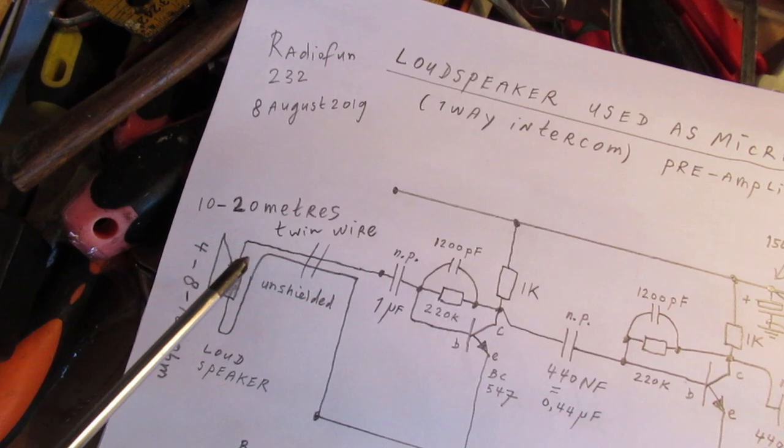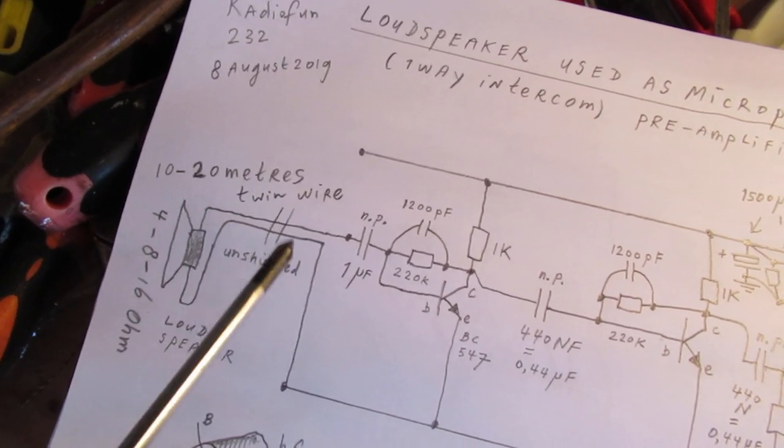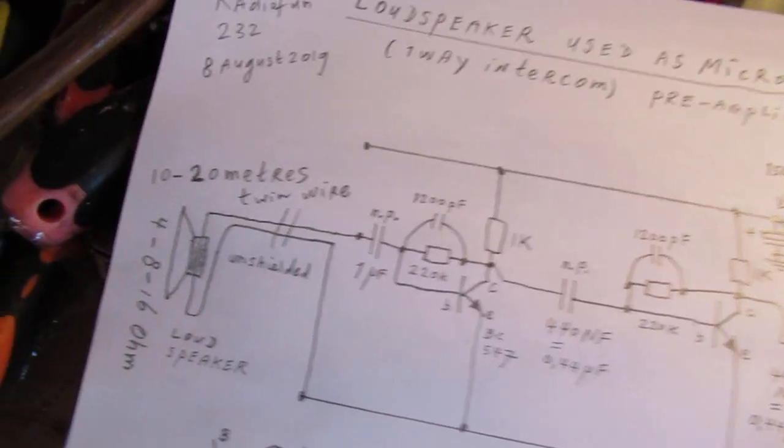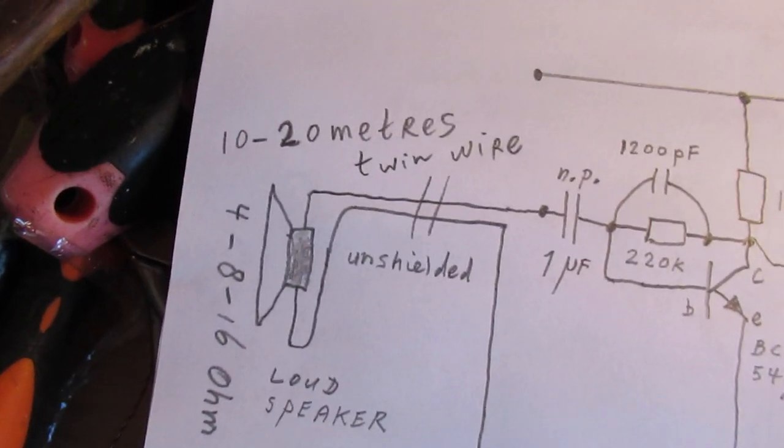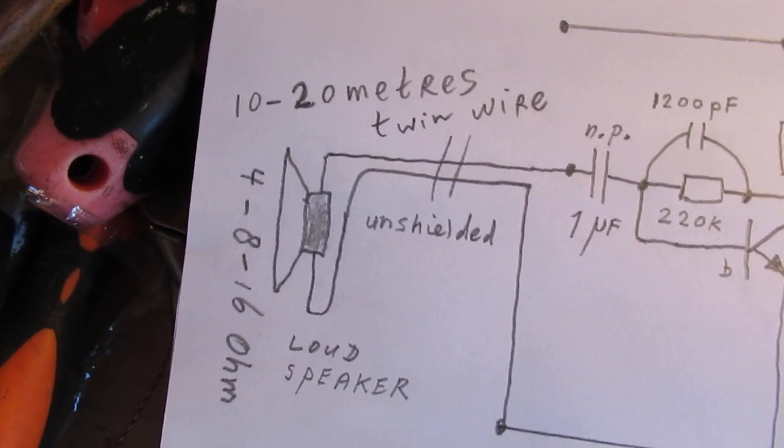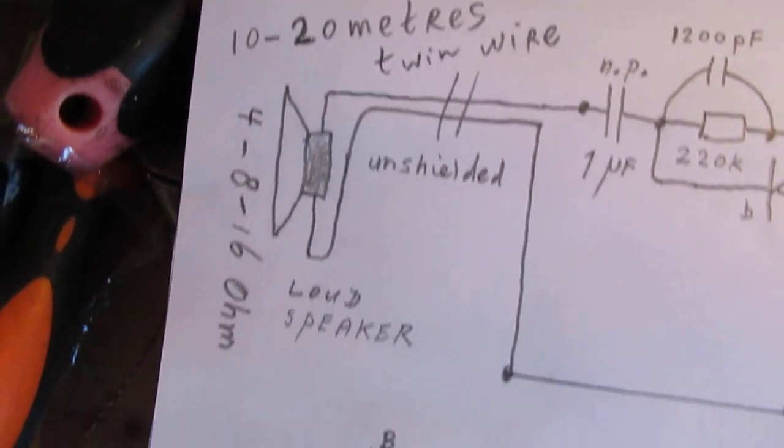And that means that you don't need shielded cable to get the signal to the end amplifier. And that's of course good - shielded cable is expensive, a simple twin wire is not expensive.